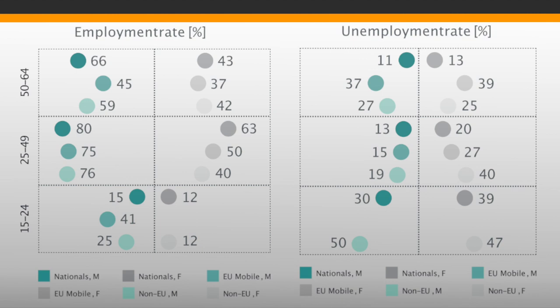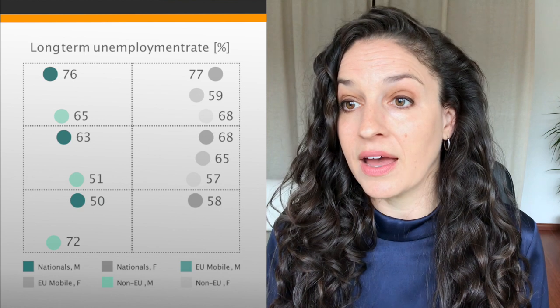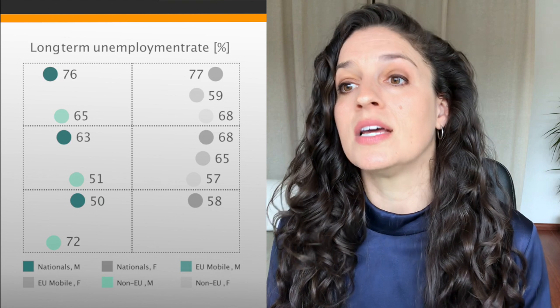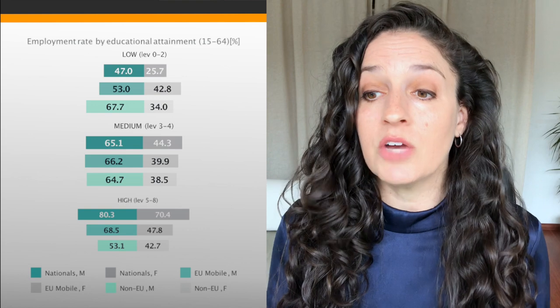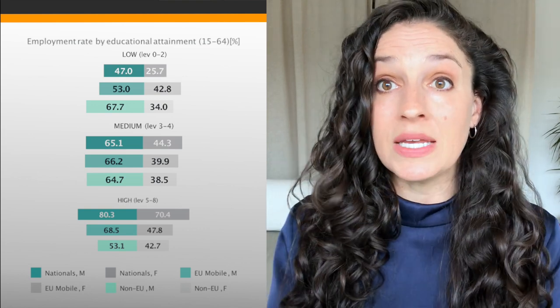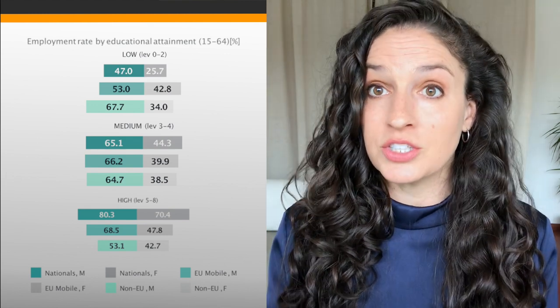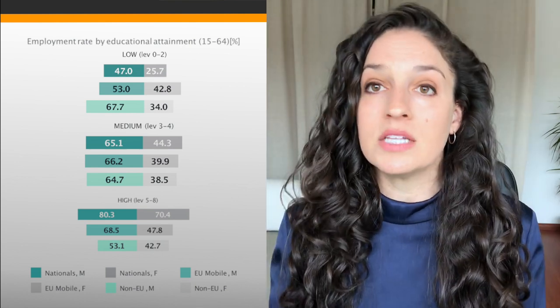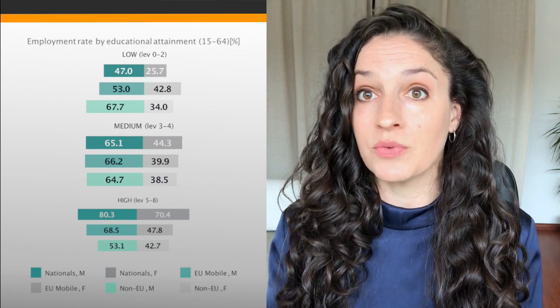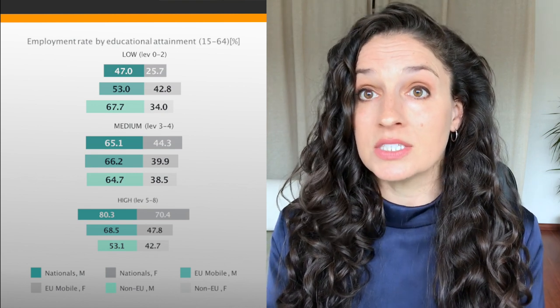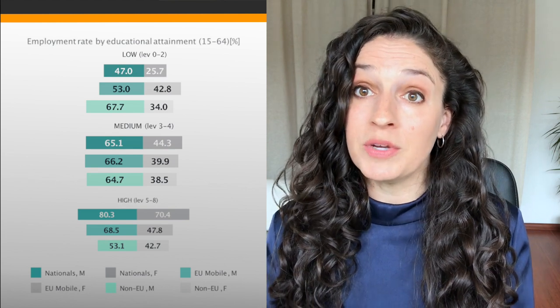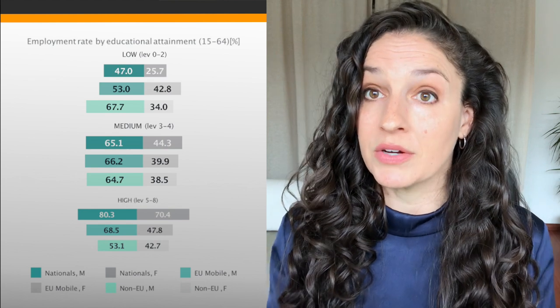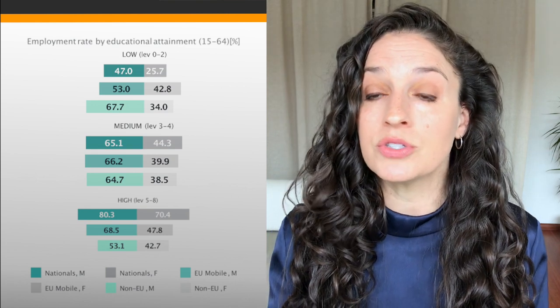Now let's look at labor market indicators: employment rates, unemployment rates, and long-term unemployment rates. In general, natives have better employment rates and lower unemployment. However, when it comes to long-term unemployment, nationals actually have higher rates than immigrants. Breaking this down by education level: at high education levels, nationals have much higher employment rates than immigrants. At medium skill levels, the groups look more similar, with non-European nationals actually performing quite well. At low education levels, immigrants are also performing quite well compared to natives.